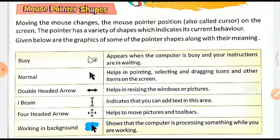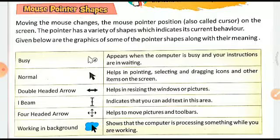Mouse pointer shape: moving the mouse changes the mouse pointer position, also called the cursor, on the screen. The pointer has a variety of shapes which indicate its current behavior. Here are some pointer shapes along with their meanings. 'Busy' — see the shape of the pointer — it appears when the computer is busy and your instructions are waiting.